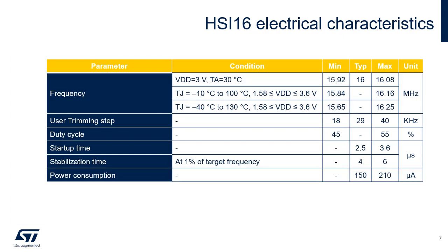This table summarizes the HSI16 oscillator electrical characteristics. The values are the same for all series. Minimum, typical, and maximum frequencies are indicated for different operating conditions. The HSI16 frequency can be trimmed in the application with a typical step of 29 kHz. Start-up and stabilization times are also indicated. Note that HSI16 has a faster start-up time than the HSE crystal oscillator. The table also provides the typical and maximum consumption of the HSI16, considering that it can be switched off using the HSI ON bit.